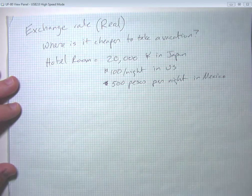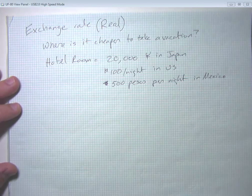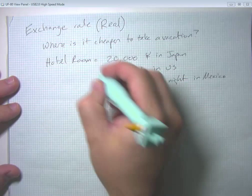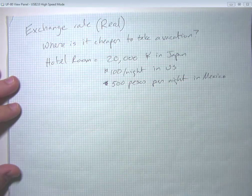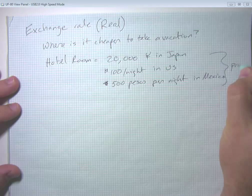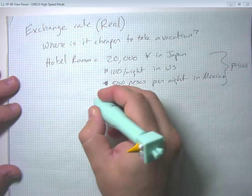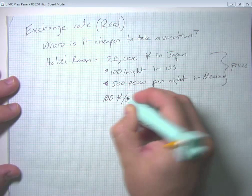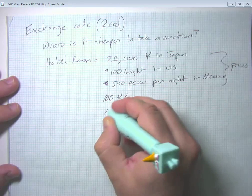Now, with just that information alone, we don't know where it's cheaper to take a vacation. We also need to combine this with information on the nominal exchange rate. So these are the information on the prices in the different countries. Information on the nominal exchange rate, let's go ahead and say it's 100 yen per dollar and 10 pesos per dollar.